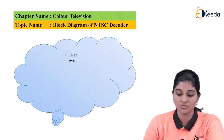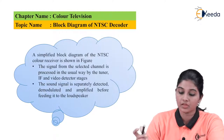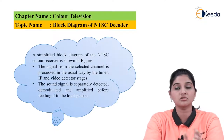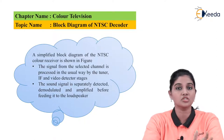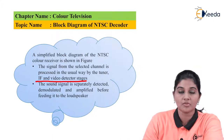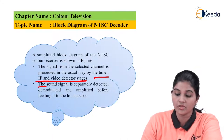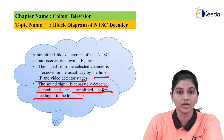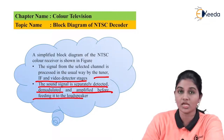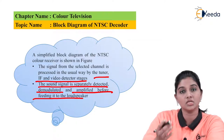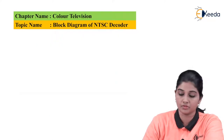Now let's move to the description part. The signal is selected, that means the signal is received from the proper channel through which it was transmitted. The IF and video detector stages are present along with the tuner stage. The sound signal is separately detected, demodulated, and amplified before applying it to the loudspeaker so that the signal strength can increase to a value which can be easily accessible for the loudspeaker.